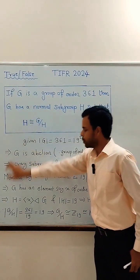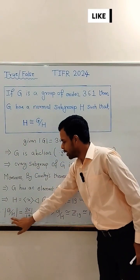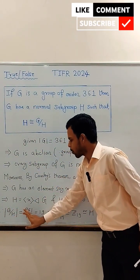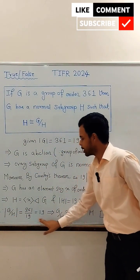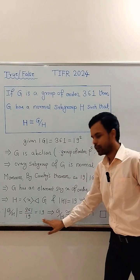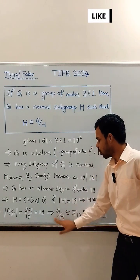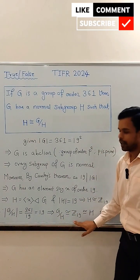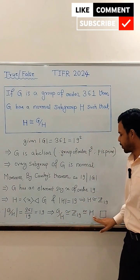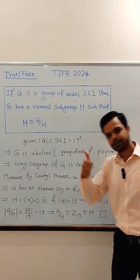Since G is a finite group, the order of G by H equals the order of G divided by the order of H, which is 361 divided by 19, that is 19. So G by H is also isomorphic to Z₁₉, and hence isomorphic to H.